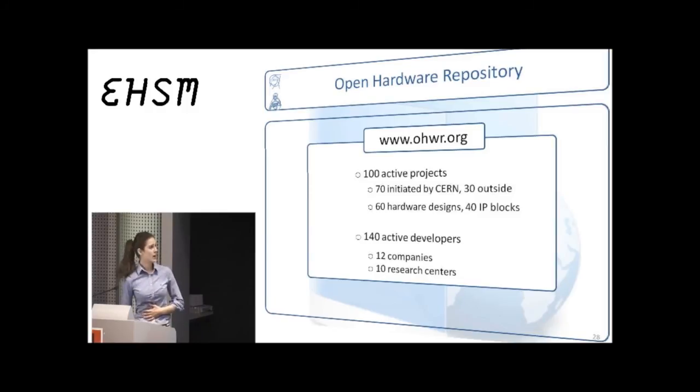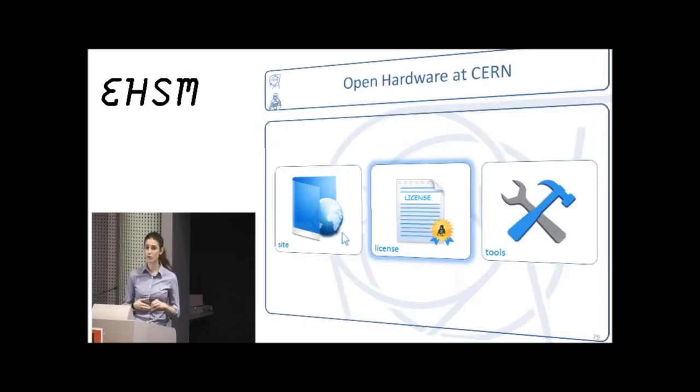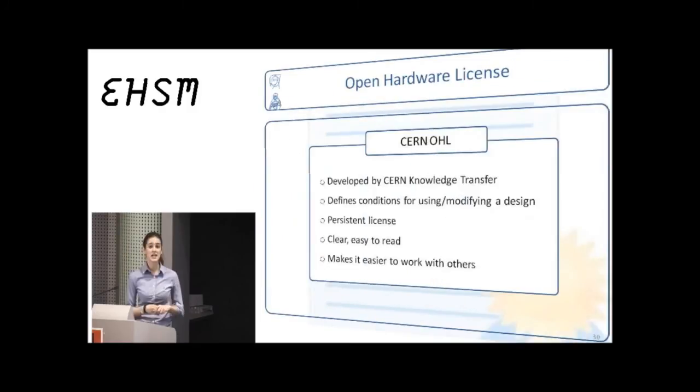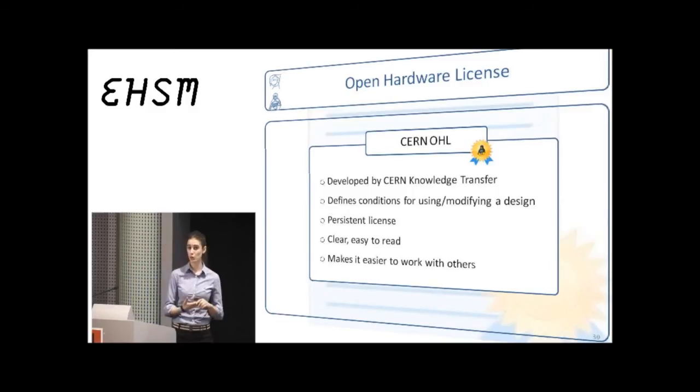Continuing now with the license, the lawyers of the CERN Knowledge and Technology Transfer Group, after a relevant study, decided that there was indeed a need for defining a new license, as none of the existing ones, neither the GPL nor the Creative Commons, were actually mentioning something clearly about manufacturing goods. So the CERN Open Hardware License defines the conditions for using and modifying a design into a persistent license. Any modification or distribution has to happen under the same license. And like this, we ensure that everyone profits from the improvements.